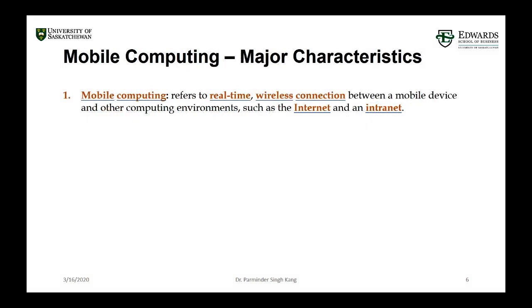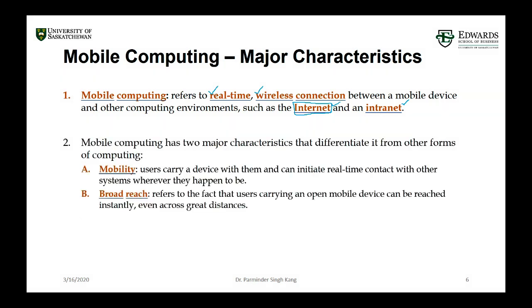That brings us to the major characteristics of mobile computing. From the previous slide: real-time connectivity, the device can change its location, and a wireless connection is required. If you are purely looking into the Internet of Things, then we want global connectivity. But not all companies will look into IoT — sometimes you only want your device to connect to a central or internal server. A good example is the Tesco smart badge, which connects only to Tesco servers to get real-time prices. The two important aspects are mobility and broad reach.